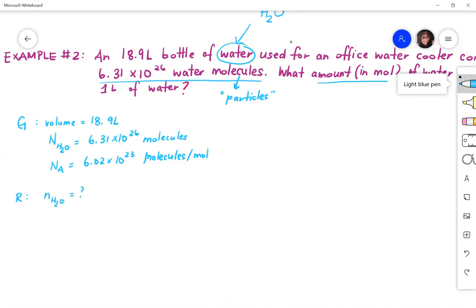What's required? Well, it says what amount in moles. So we're looking for number of moles of water in this water cooler, right? So for the 18.9 liter bottle of water. Analysis requires the same equation as before. N equals n times Na.